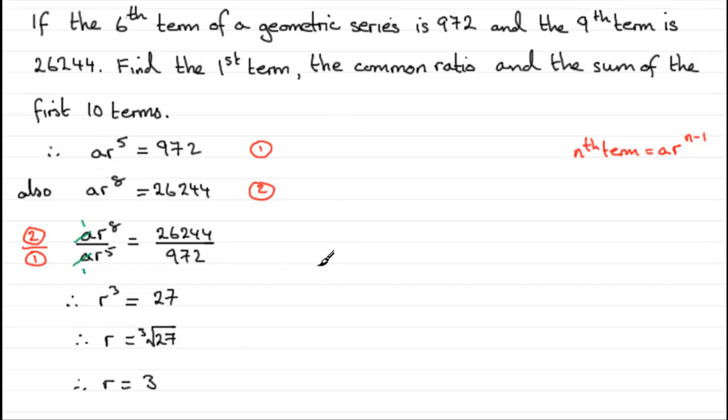We need to get that first term. Well, that's going to be easy now, because all we need to do is substitute r equals 3 into either equation 1 or 2. I'm going to go for equation 1. So if we sub r equals 3 into equation 1, then we have a times 3^5 equals 972. So to get a, all we need to do is divide 972 by 3^5. And if you work that out on your calculator, you'll find that a, the first term, is 4.